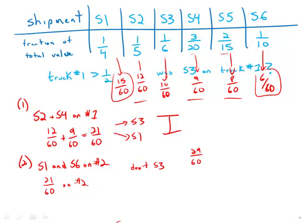And so what that means is we're going to have to include S3 in some combination. So in other words, it would be impossible to have S1, S3, and S6 on truck two and have truck one at a value of greater than one half. That just doesn't work.